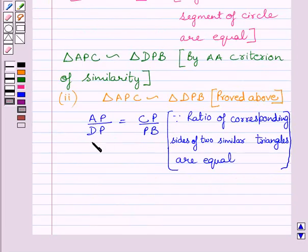Now multiplying both sides of this expression by DP into PB, we get AP multiplied by PB is equal to CP multiplied by DP.